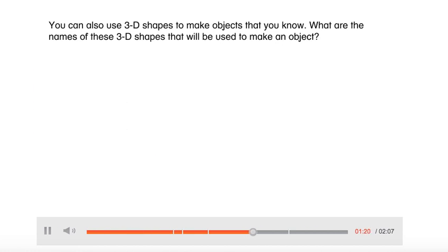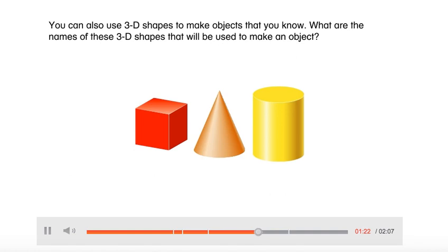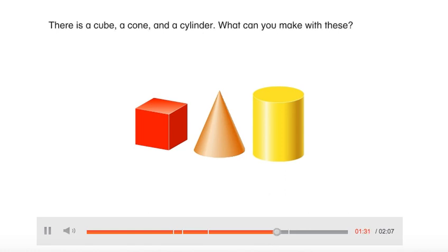You can also use 3D shapes to make objects that you know. What are the names of these 3D shapes that will be used to make an object? There is a cube, a cone, and a cylinder.